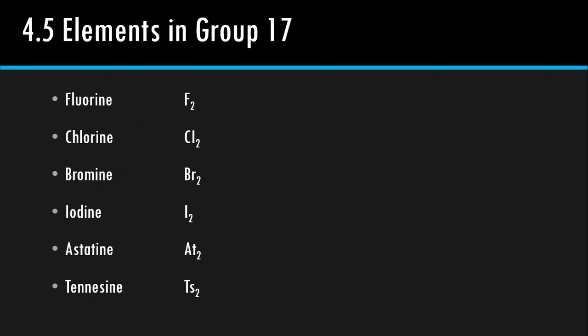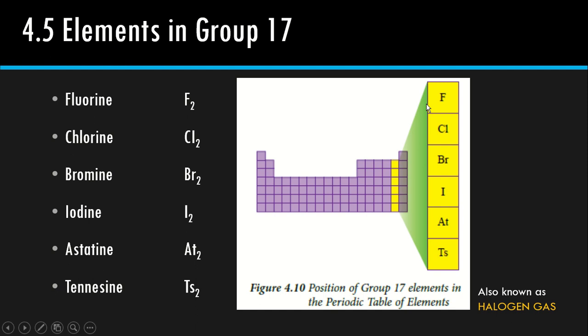You have to memorize the position of the element. Atas sekali adalah fluorine, chlorine, bromine, iodine, astatine, and tennessine. Element in Group 17 also known as halogen gas. So they are gases. That's why formula dia diatomic macam ni.